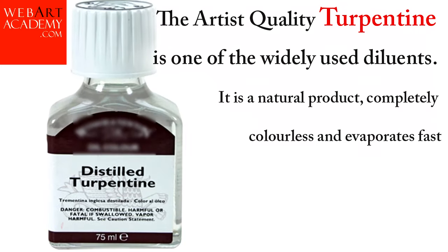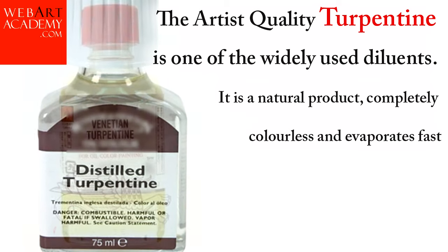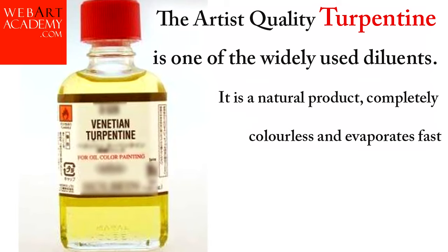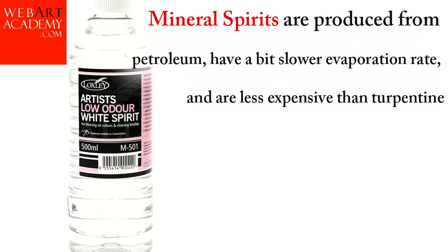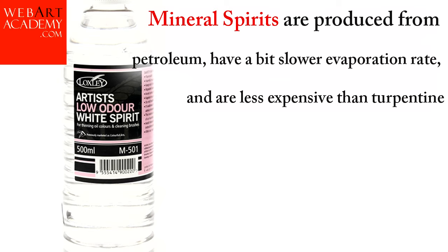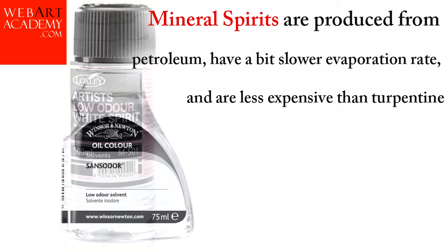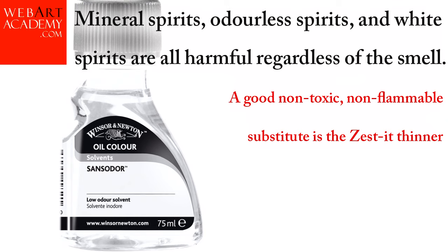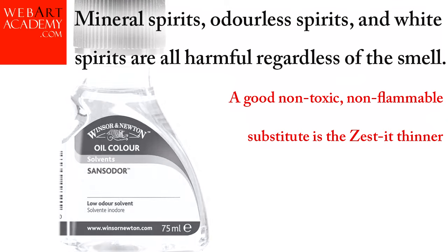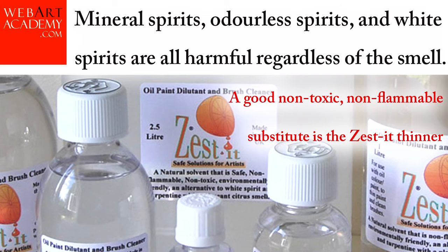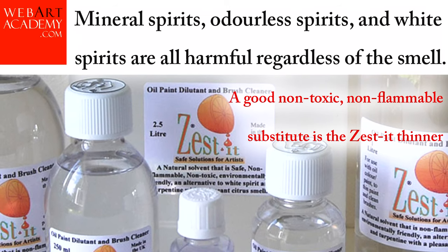Turpentine. Artist-quality turpentine is one of the widely used diluents. It is a natural product, completely colorless, and evaporates fast. Mineral spirits are produced from petroleum, have a slightly slower evaporation rate, and are less expensive than turpentine. Mineral spirits, odorless spirits, and white spirits are all harmful regardless of the smell. A good non-toxic, non-flammable substitute is the Zest-It thinner.